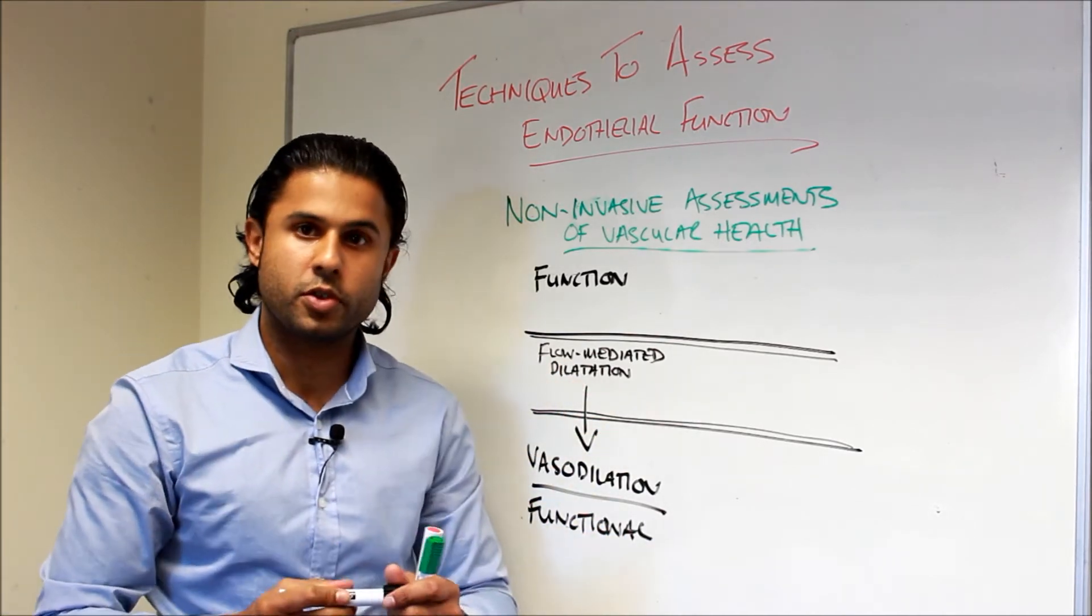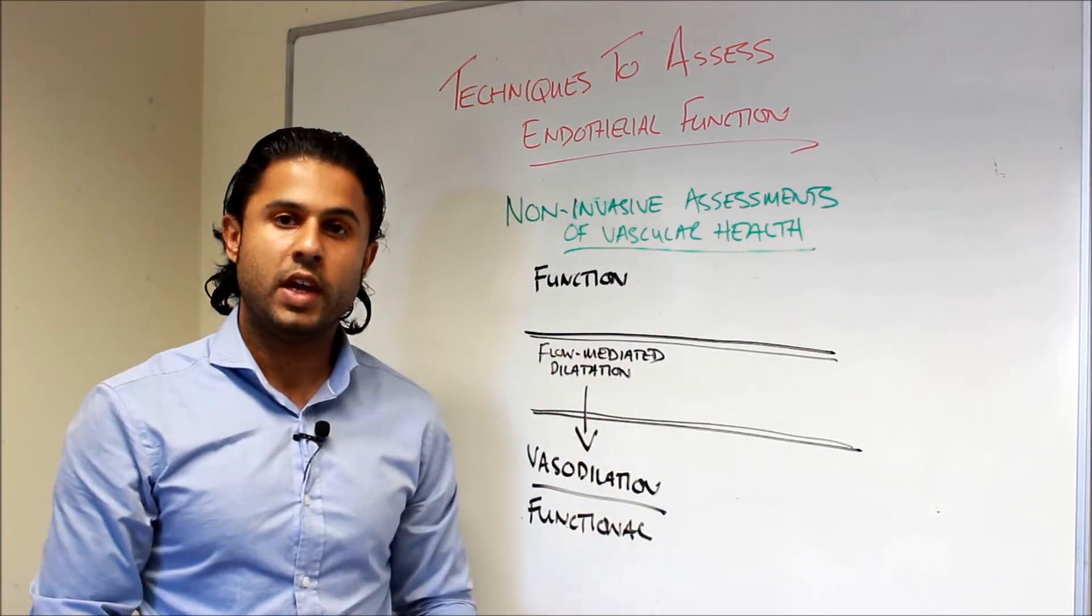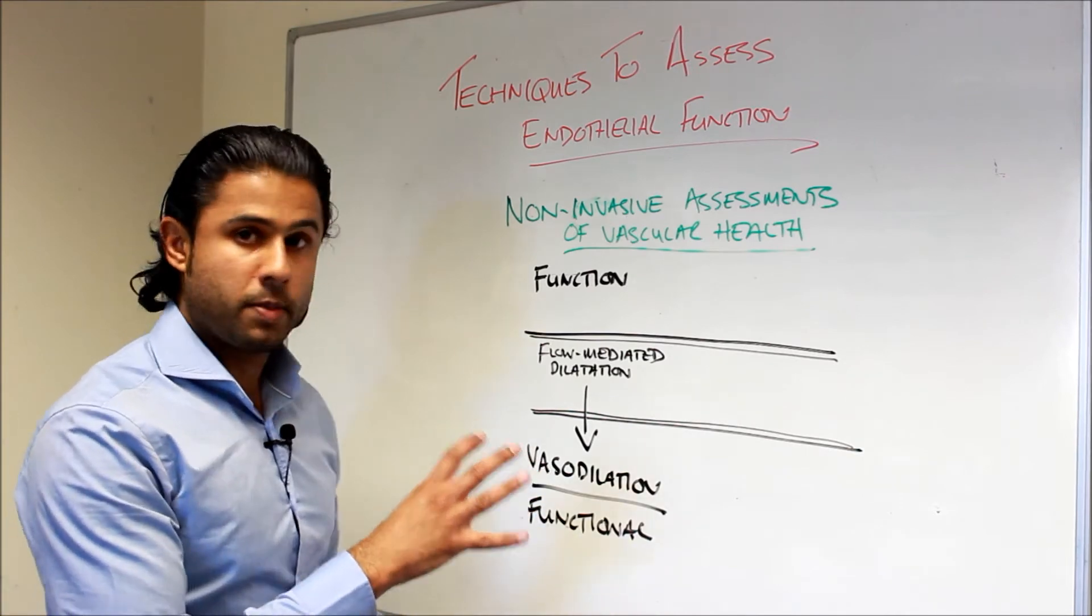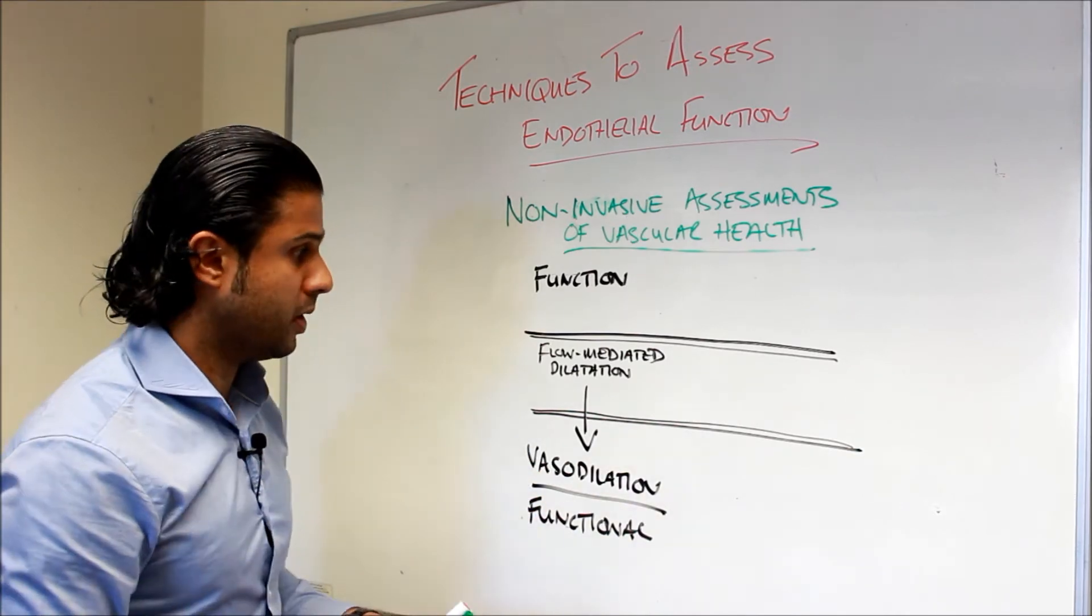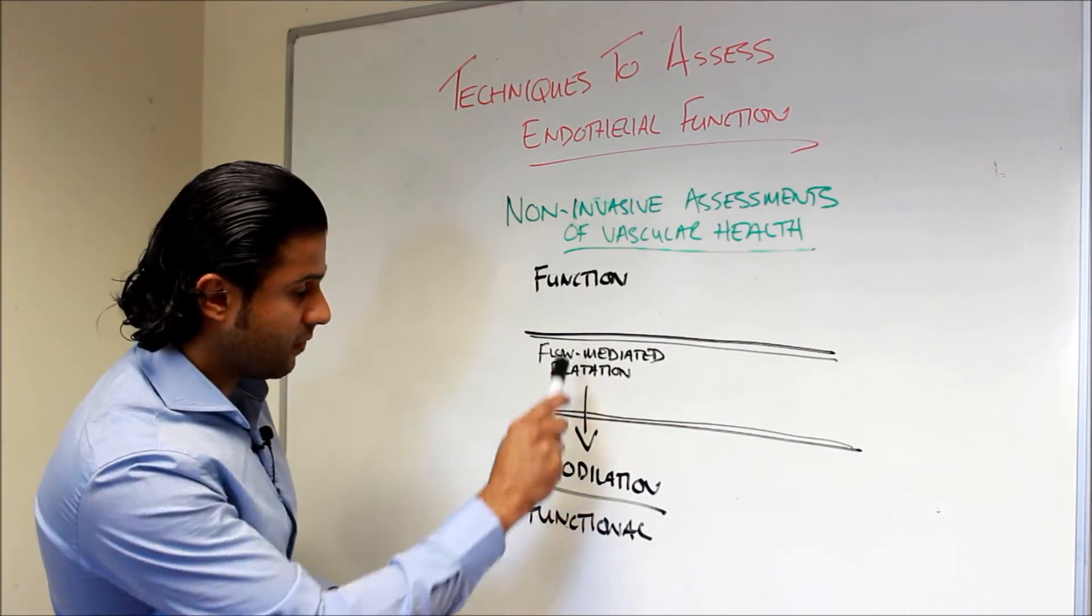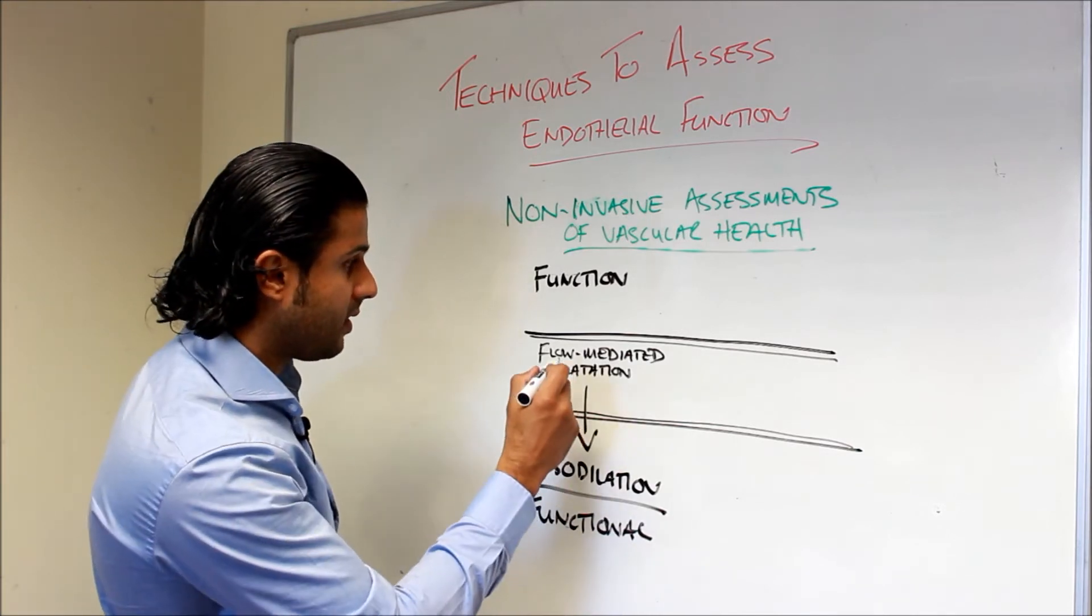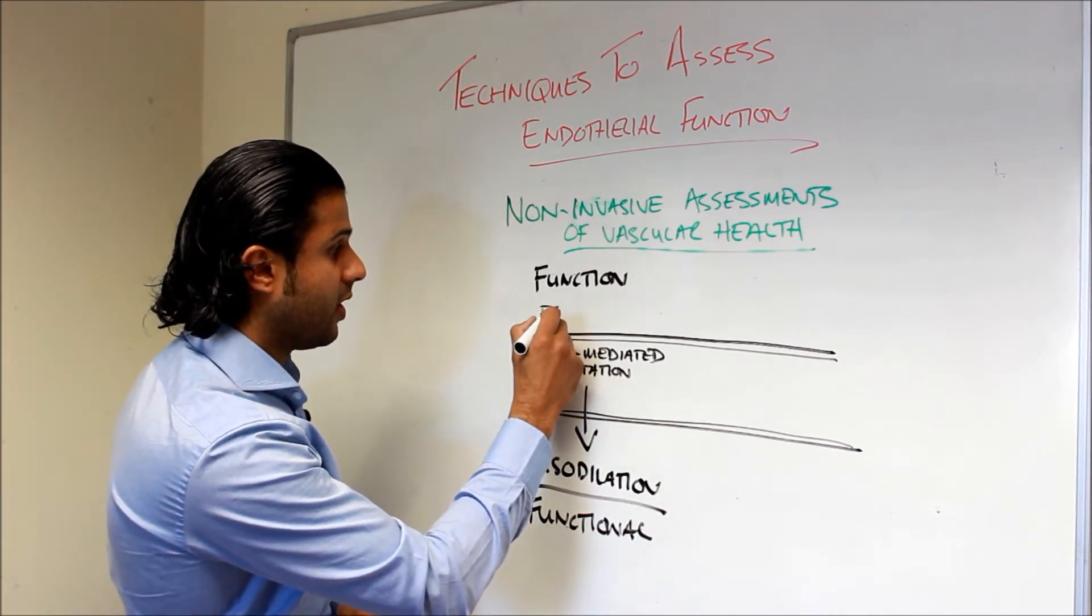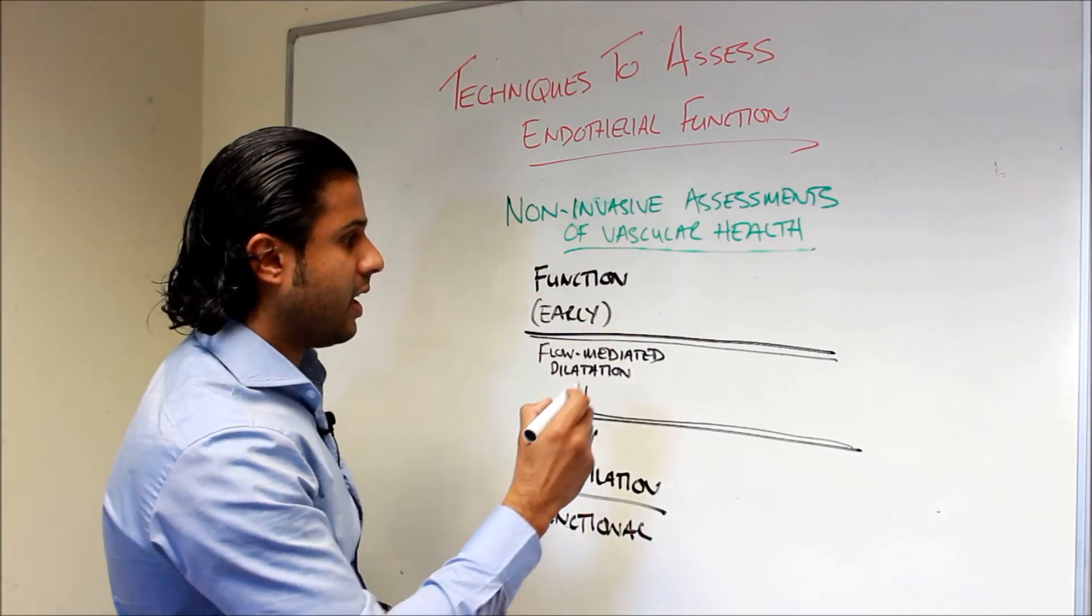Now there are other assessments as well. You can actually give various different drugs to stimulate the release of nitric oxide. This is a functional measure, and this is giving us an idea of the early changes within the blood vessel. So I'm going to put early.